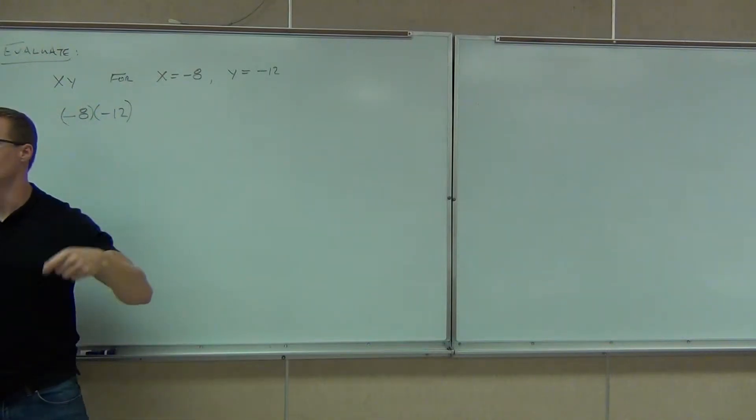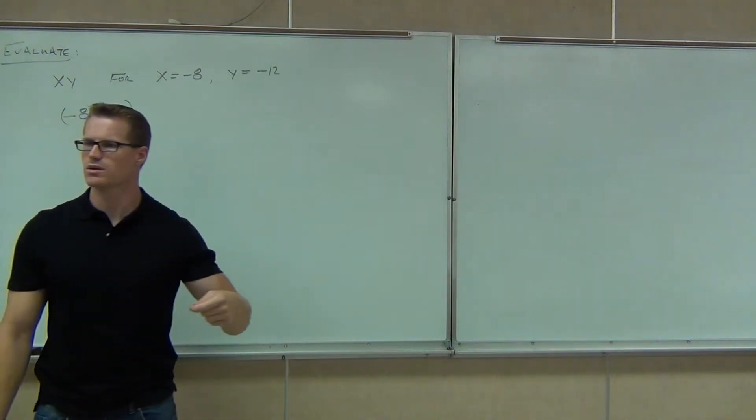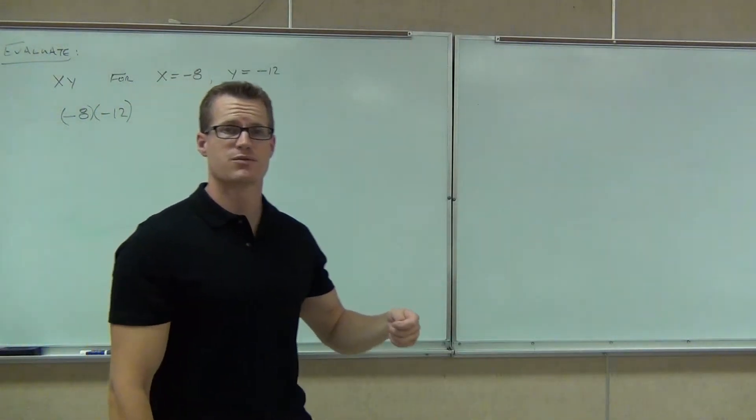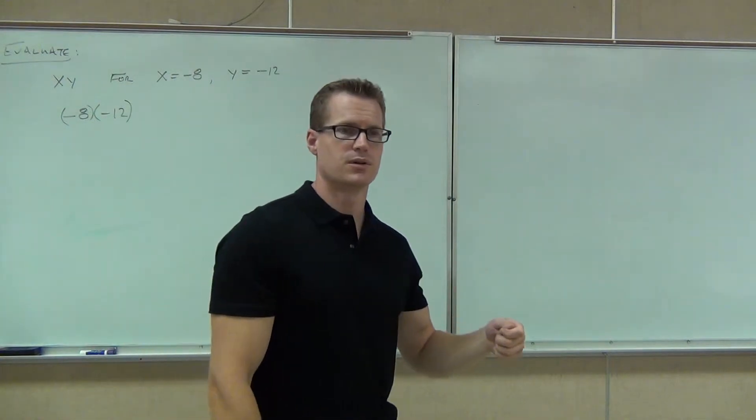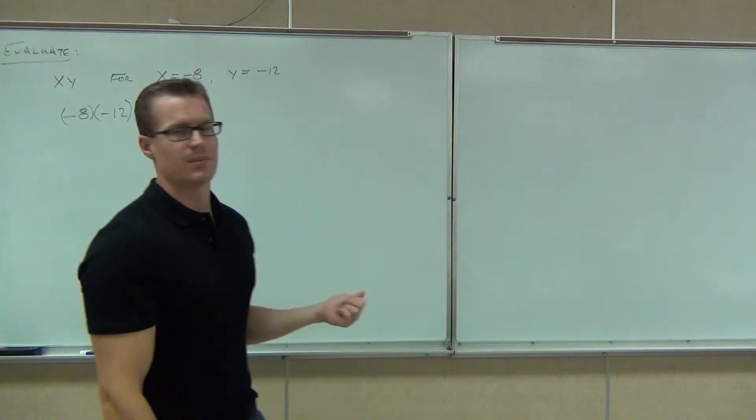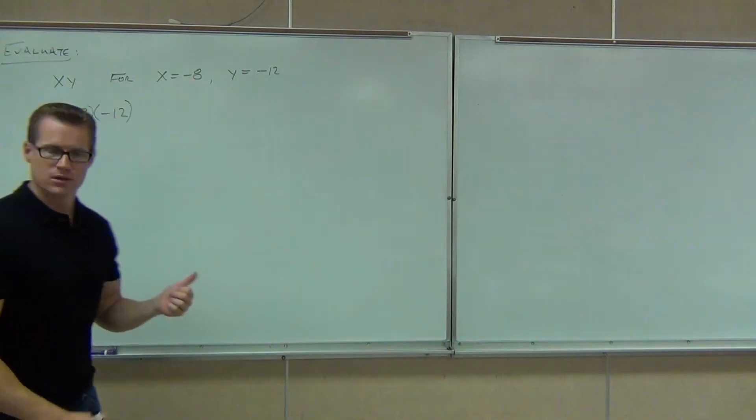So we have negative 8 times negative 12. Now we can go ahead and use those rules that we learned last time. Is this going to be positive or negative? Positive. Beautiful. How much? 96.